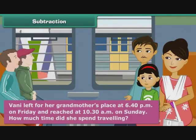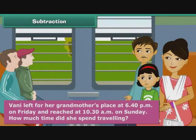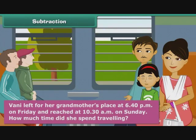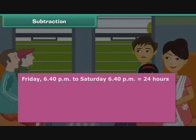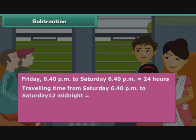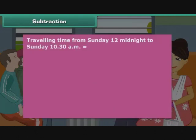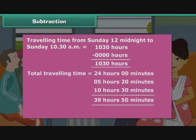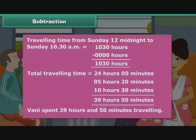Vani left for her grandmother's place at 6.40 p.m. on Friday and reached at 10.30 a.m. on Sunday. Friday 6.40 p.m. to Saturday 6.40 p.m. is equal to 24 hours. Using the 24-hour clock, travelling time from Saturday 6.40 p.m. to Saturday 12 midnight is 2400 minus 1840 hours, which equals 5 hours and 20 minutes. Travelling time from Sunday 12 midnight to Sunday 10.30 a.m. is 10 hours 30 minutes. Total travelling time is 39 hours and 50 minutes. Therefore, Vani spent 39 hours and 50 minutes travelling.